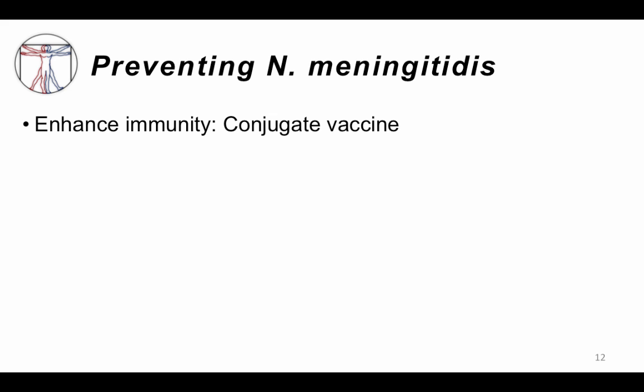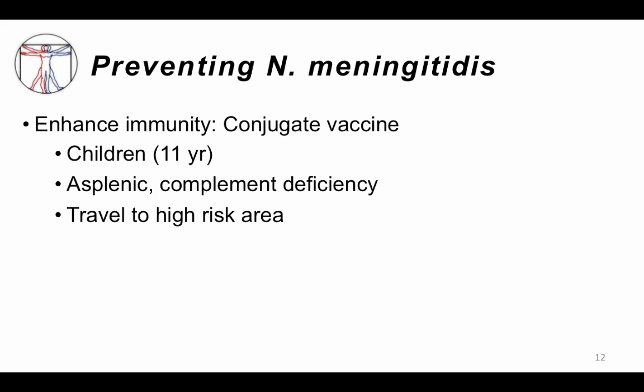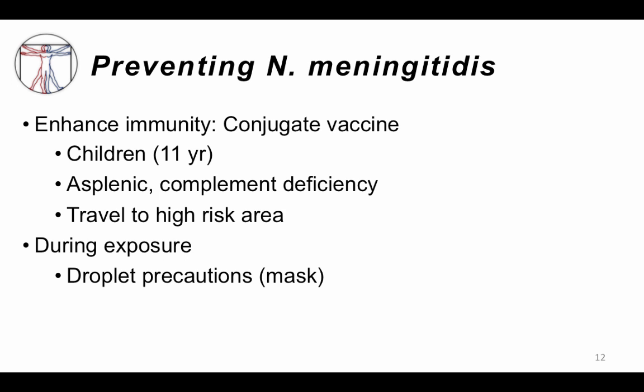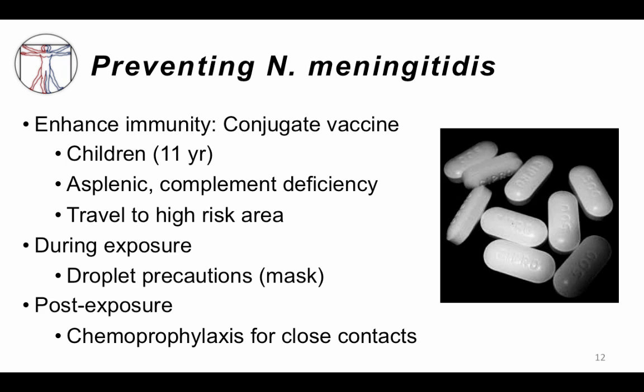For Neisseria meningitidis, a conjugate vaccine also exists. It is recommended in children starting at age 11, and also for those with asplenia, complement deficiencies — such as terminal complement deficiency, a known risk factor — or those traveling to a high-risk area. During exposure, droplet precautions should be worn. If you've been exposed, chemoprophylaxis antibiotics can be taken to prevent subsequent infection. In adults, ciprofloxacin (a fluoroquinolone) is often used; in children, rifampin or ceftriaxone.